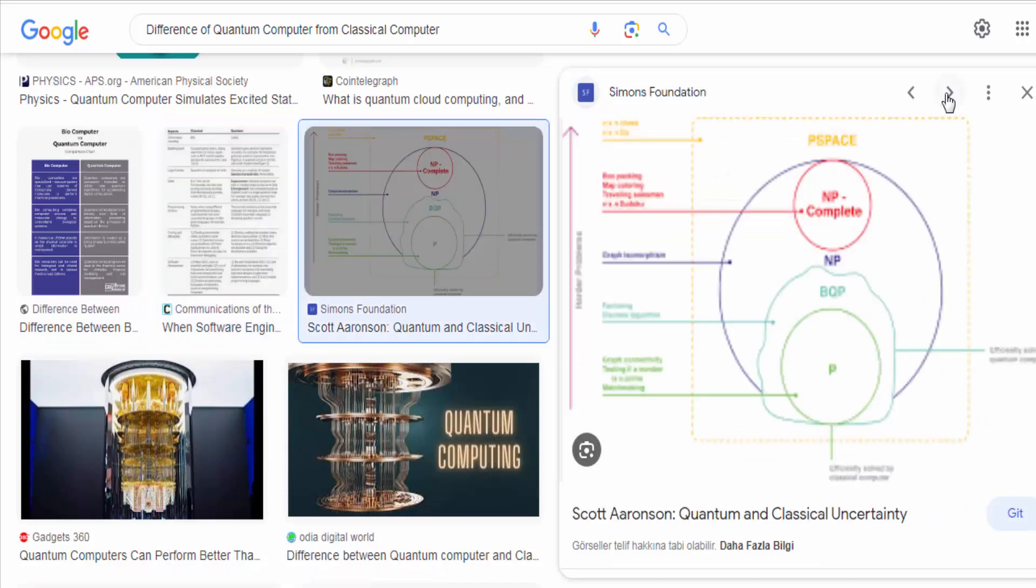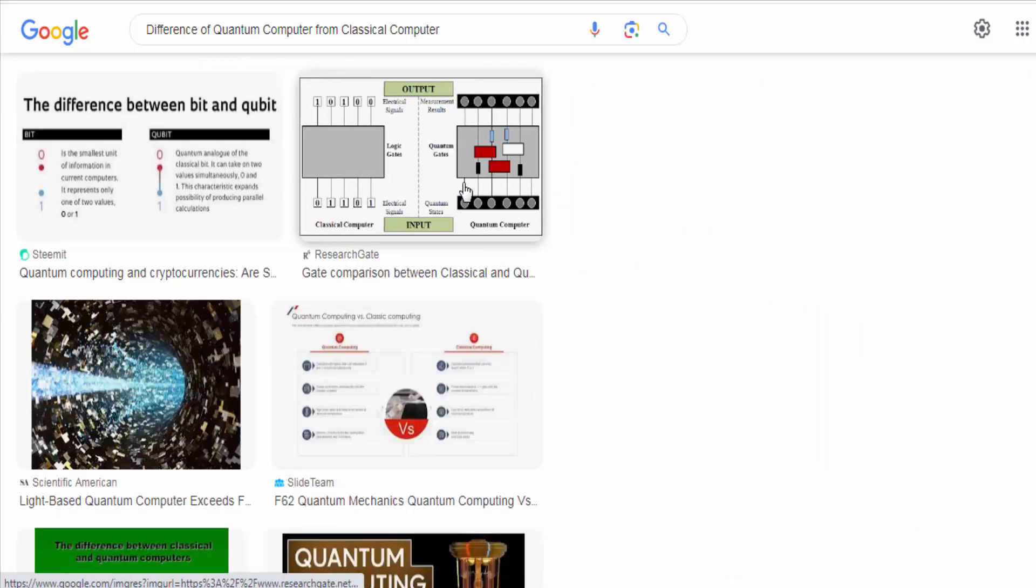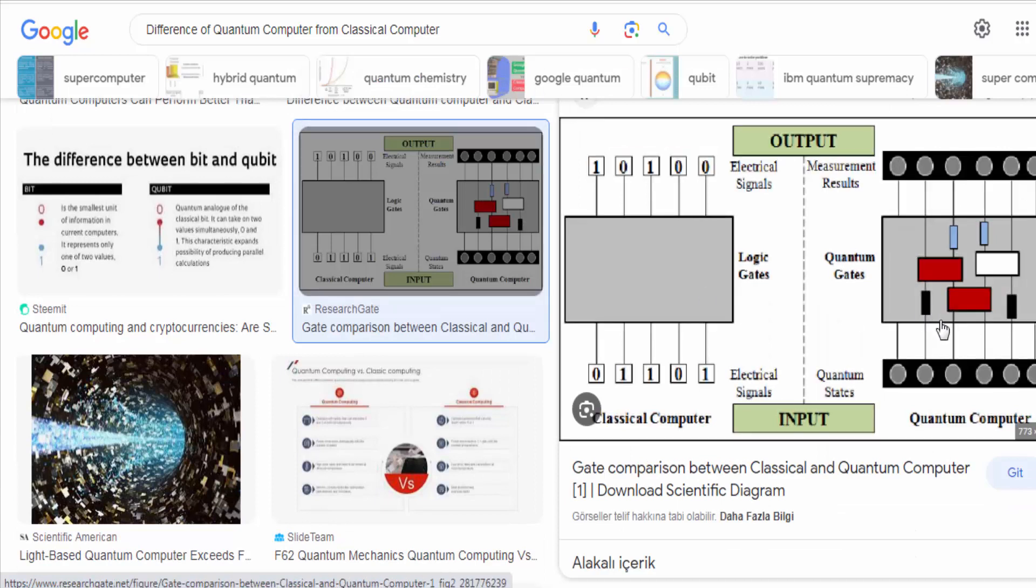Quantum algorithms, such as Shor's algorithm for factoring large numbers and Grover's algorithm for searching databases, can solve certain problems significantly faster than classical algorithms.